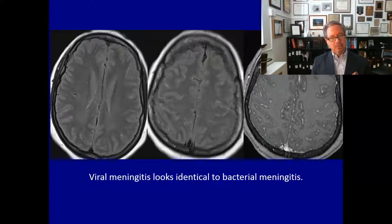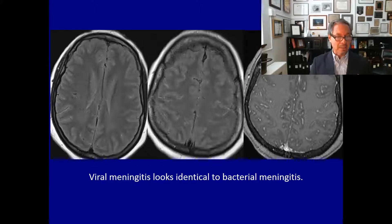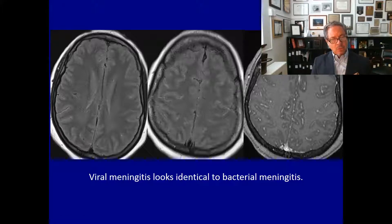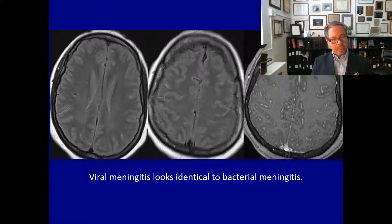Here we have a case of viral meningitis, and notice that the imaging findings are basically identical to those of bacterial meningitis. The FLAIR images on the left and center only show some high signal intensity in the CSF, and the gadolinium image on the right only shows some enhancement on the surfaces of the brain. One must remember that not all high signal intensity of the CSF on FLAIR images indicates infection — there can be many causes including metastatic disease, subarachnoid hemorrhage, and artifacts.